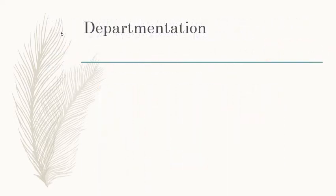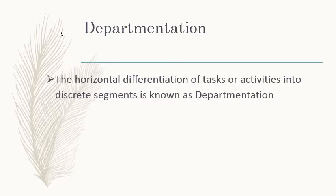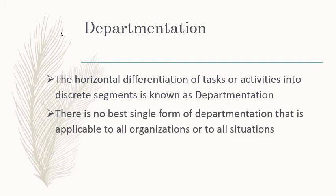We will now discuss departmentation. Departmentation is the horizontal differentiation of tasks or activities into discrete segments. An organization or company will have different departments, and departmentation defines how those departments are divided and on what basis they are set up. There is no single best form of departmentation applicable to all organizations or situations — it varies, and the same organization may switch forms over time.